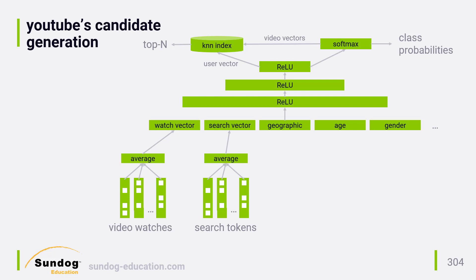This may seem like an arbitrary choice, but they experimented with other ways of doing it, including summing and taking the max value for each component. The way the embeddings work is itself learned through gradient descent backpropagation, so their system is actually learning the best way to reduce the dimensionality of their sparse data. In this way, they've avoided the problem of only training the system on videos or search tokens that were actually invoked by any individual user.